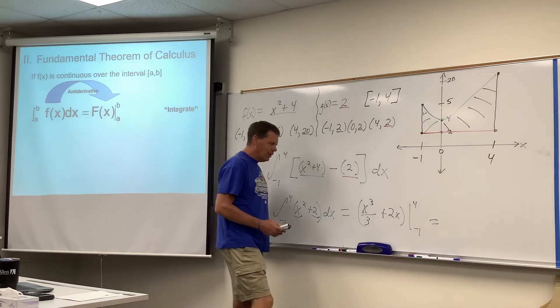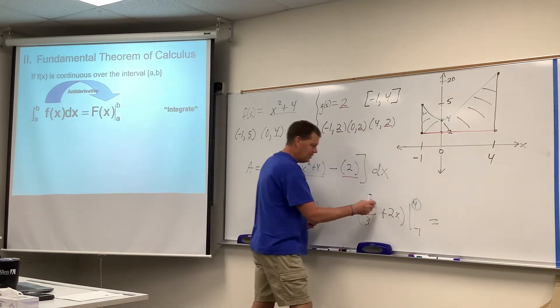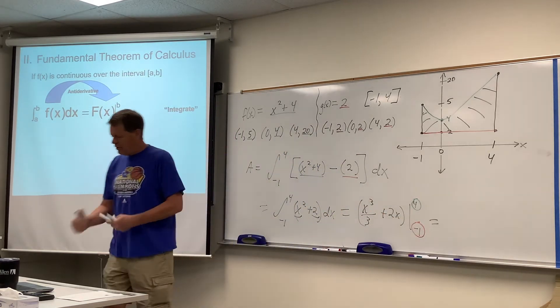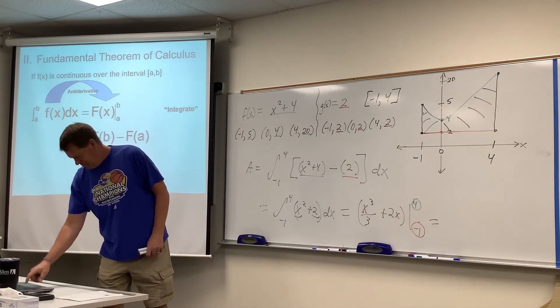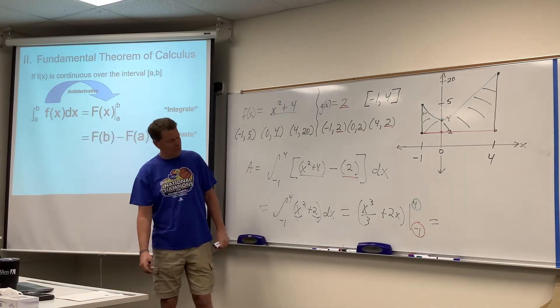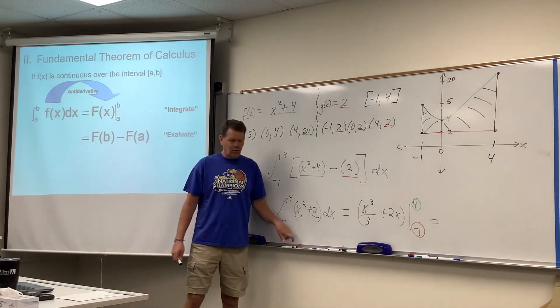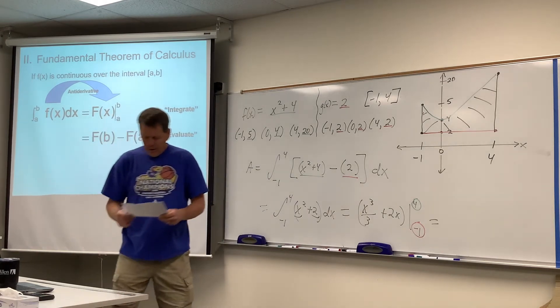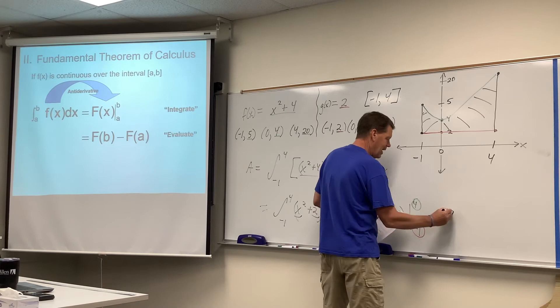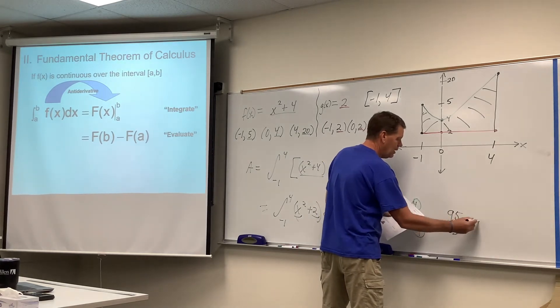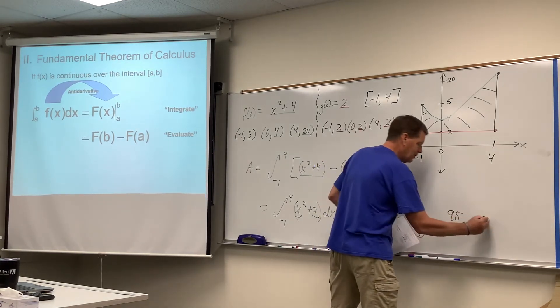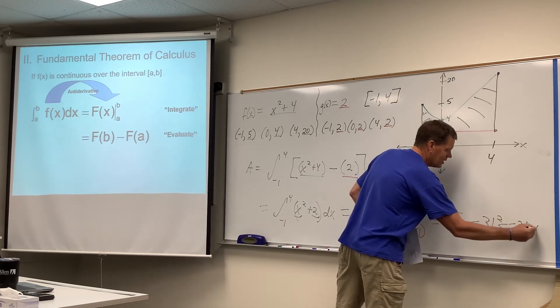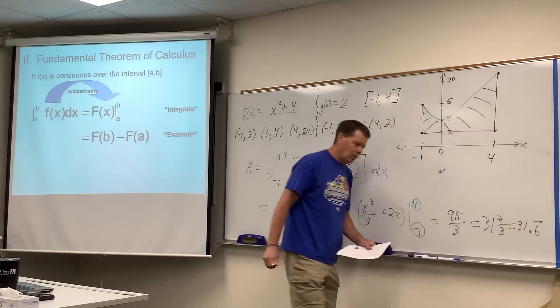And that will be evaluated between negative one and four. And you guys know the drill. You put four in for X and crunch it out. You put negative one in for X and crunch it out. And then you just subtract the two. So that's actually arithmetic, if you really want to be snobby about it. And so the remaining number crunching is something we hope by now totally makes sense to you. And that turns out to be 95 over three, otherwise known as 31 and two-thirds, otherwise known as 31.6 repeating. Any of those will work for me. I don't care.